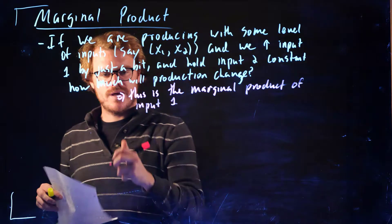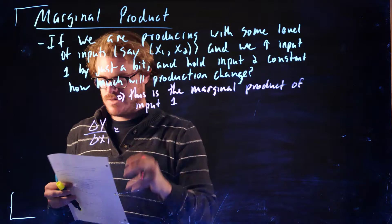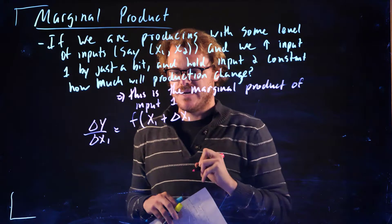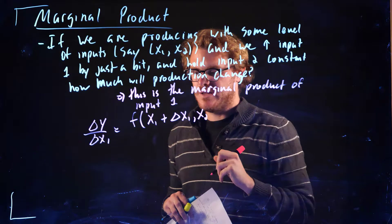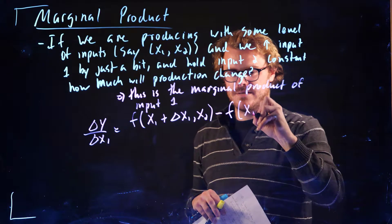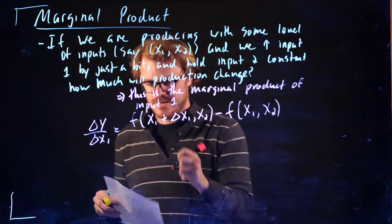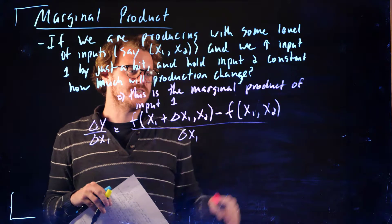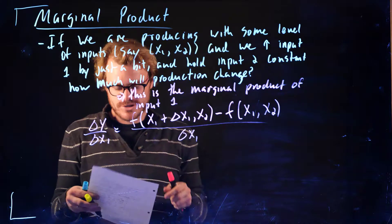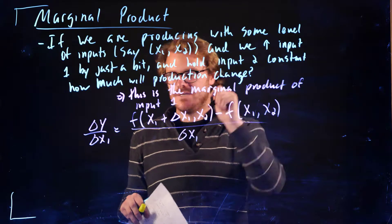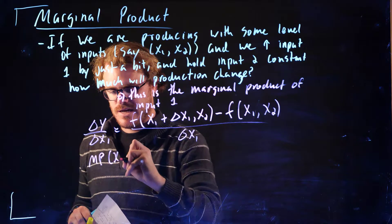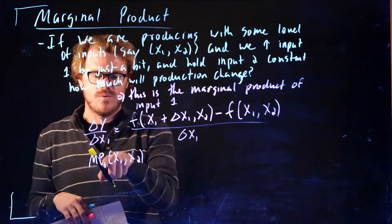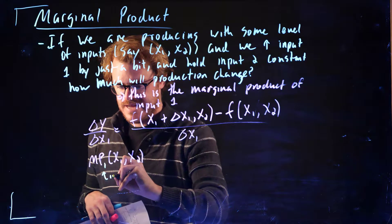If we wanted to write out what this was, this would be the change in y for the change in x1. That equals the production function at the old level of input 1 plus how much we're changing it, keeping the level of input 2 constant, minus the old level of production, over the change in x1. We're going to call this MP of x1, x2, with a little 1 here to indicate that it's with respect to input 1.